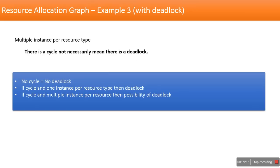So our conclusions are: in a resource allocation graph, if there is no cycle, there will be no deadlock. If there is a cycle and we have one instance per resource type, there will be a deadlock. If there is a cycle and multiple instances per resource type are present, there is only a possibility of deadlock — not a certainty.